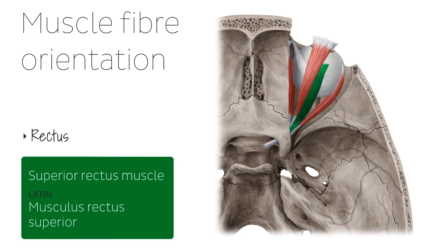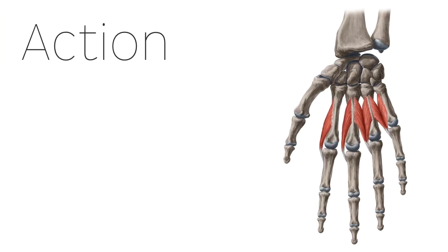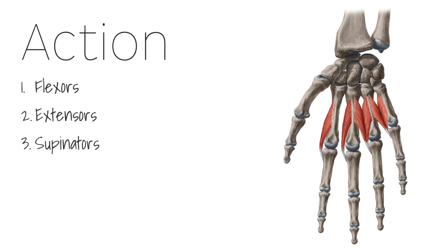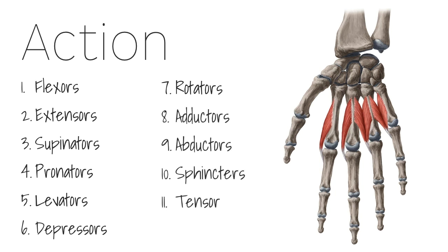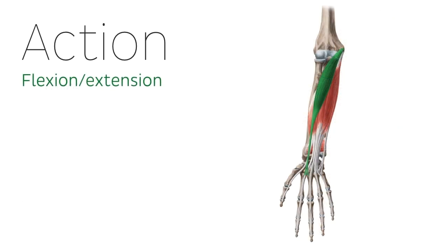The fourth method used in deriving the name of a muscle is by naming it according to the action that the muscle facilitates. As such, muscles can be described as flexors, extensors, supinators, pronators, levators, depressors, rotators, adductors, abductors, sphincters, and tensor muscles. Starting with flexors: the flexor muscles carry out flexion, and a good example are the flexor muscles of the forearm.